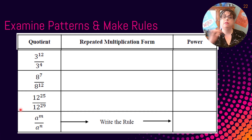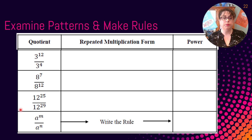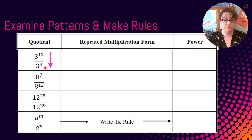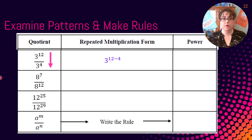Now instead of writing everything out, let's just apply our rule. Three to the twelfth divided by three to the fourth: we have 12 and 4, so we do the subtraction. Three to the 12 minus 4 gives us three to the eighth.